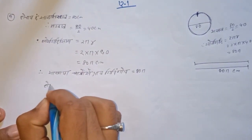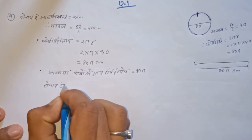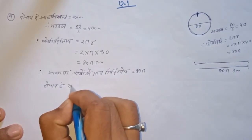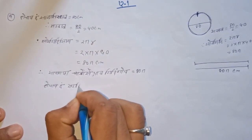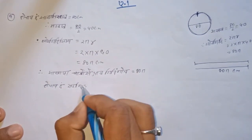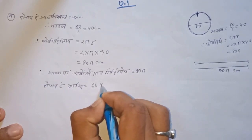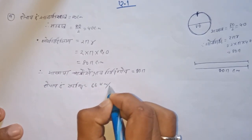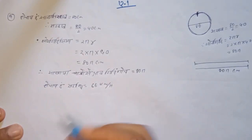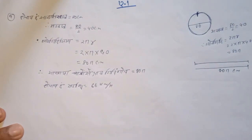We are now given the speed as 66 km per hour. This can also be expressed in centimeters per hour or kilometers per hour.